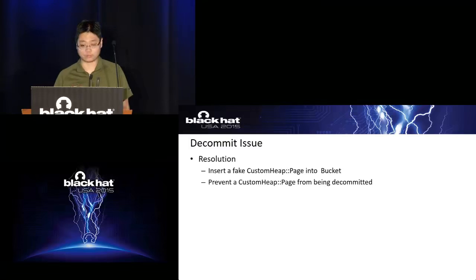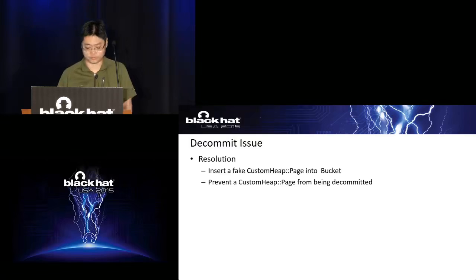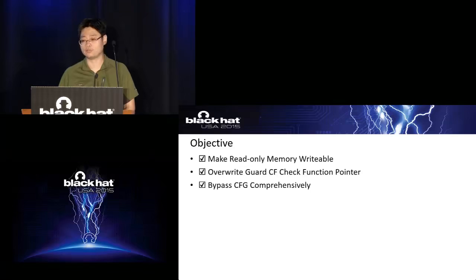To resolve this, we have two choices. The first is to insert a fake custom heap page into the bucket — since it is faked, it will not be decommitted and will survive to the destructor. The other solution is to prevent the page we chose from being decommitted by modifying some flags in the custom heap object. So now we can make any read-only memory writable, meaning we can overwrite the guard CF check function pointer with anything we like — and thus bypass CFG comprehensively.